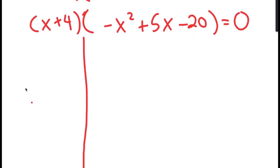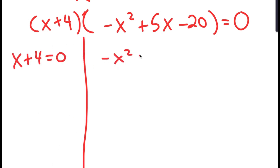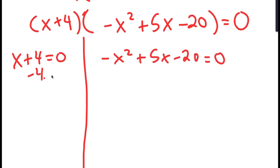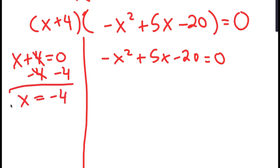So I get two equations: x + 4 = 0 and negative x squared plus 5x minus 20 = 0. For x + 4 = 0, I subtract 4 from both sides and get x equals negative 4.